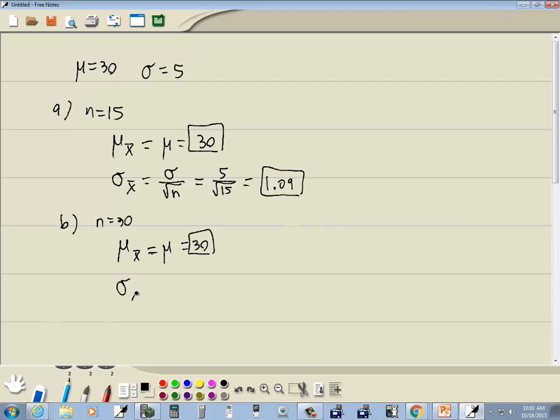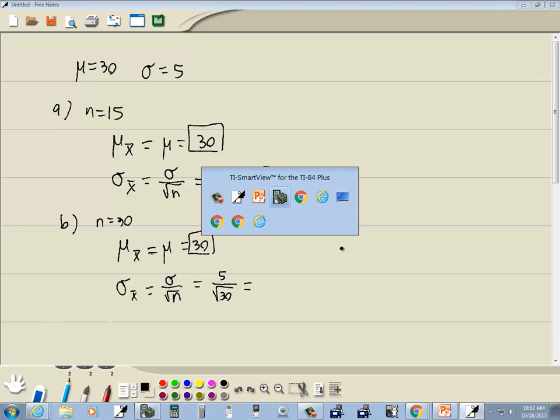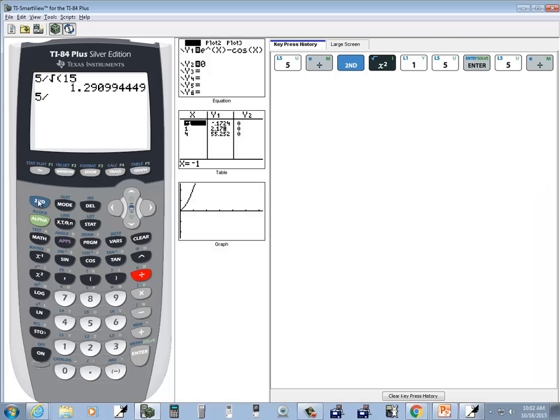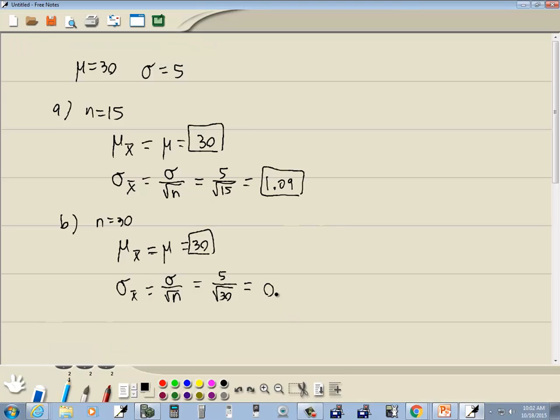And sigma sub x bar is again just equal to sigma divided by the square root of n. So we're going to have 5 divided by the square root of 30. So we've got 5 divided by the square root of 30. Two decimal places would give us 0.91. And those would be our answers.